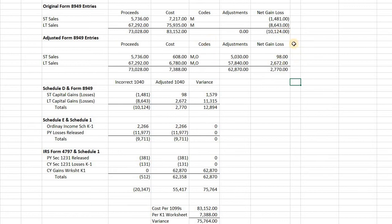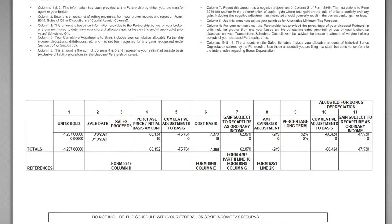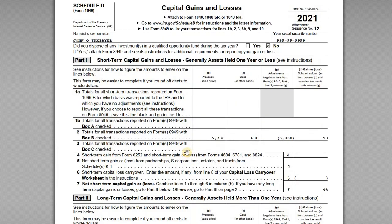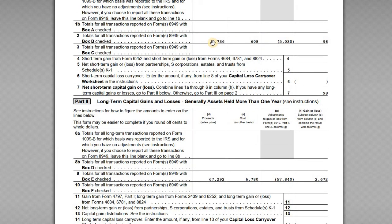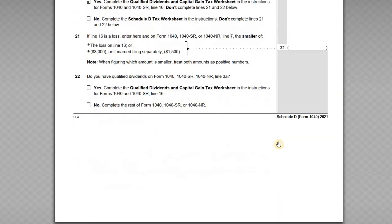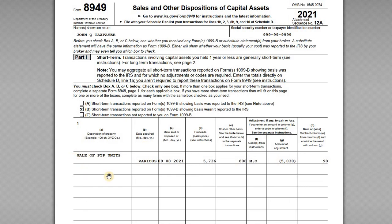On the adjusted 1040 Schedule D, we can see the adjusted numbers: the short-term net gain of $98, the long-term gain of $2,672, with gross proceeds, cost basis, and adjustments all flowing from the 8949. The sale of PTP units on Form 8949 reflects the proceeds, adjusted cost basis, the adjustments, and the net gain or loss after all K-1 worksheet adjustments.